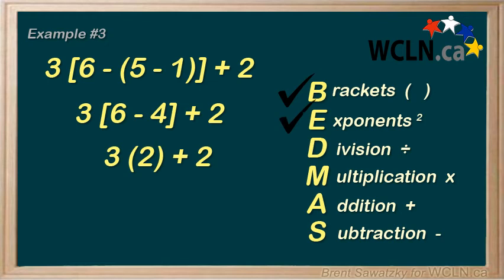So, we do the 6 minus 4 is 2, and now we're done with the bracket step. We look at exponents. We don't have any exponents in this case, so we can move on. Division and multiplication, well, now we have a 3 times 2. So, we can multiply those to get 6, and we're still left with our plus 2 at the end. Now, in our last step, addition and subtraction, we can bring the 6 and 2 together for a final answer of 8.